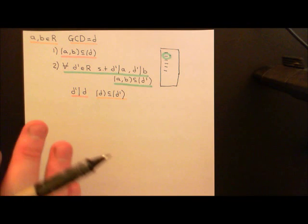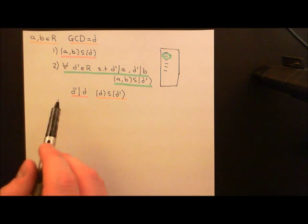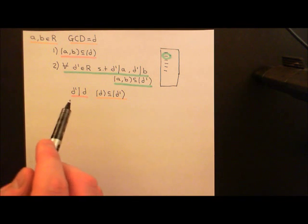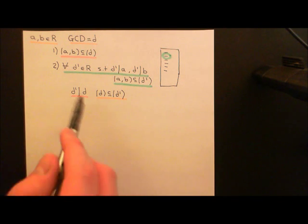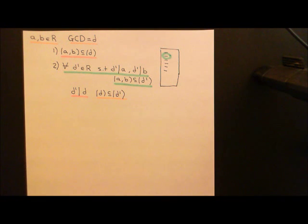I hope you'll acknowledge that this is the intuitive definition — the same definition as you've used classically with the integers — that all the other divisors divide the greatest common divisor, so the GCD is a multiple of all the other common divisors of the two elements. That's explicitly how you'd go about finding a greatest common divisor.